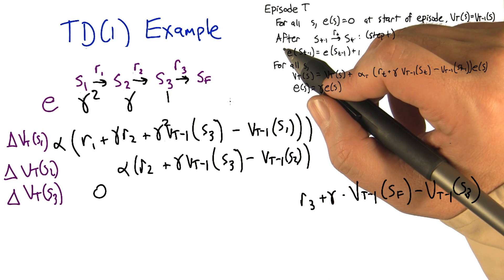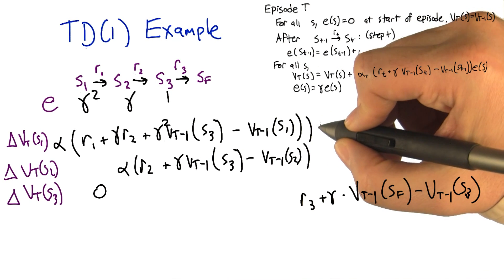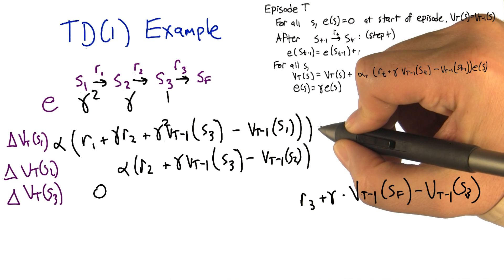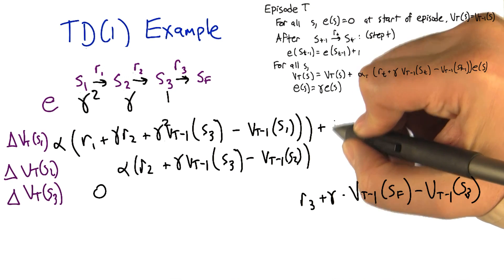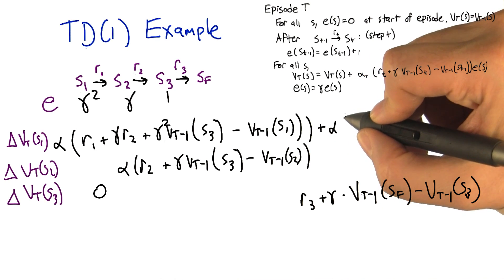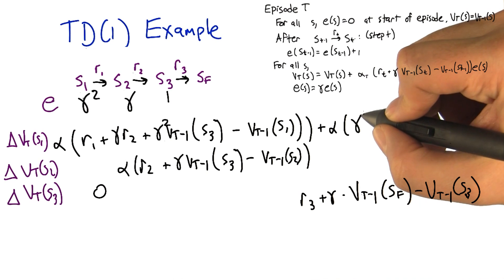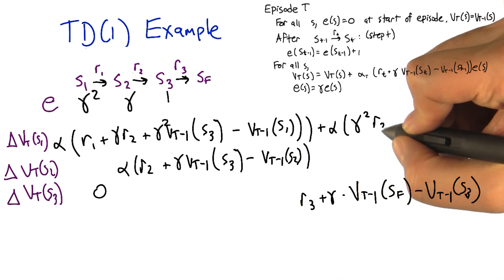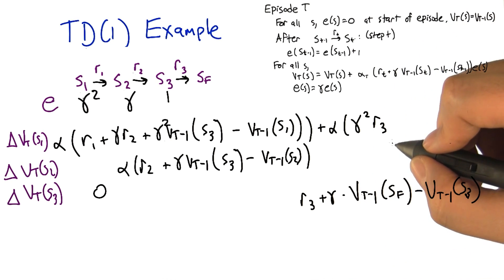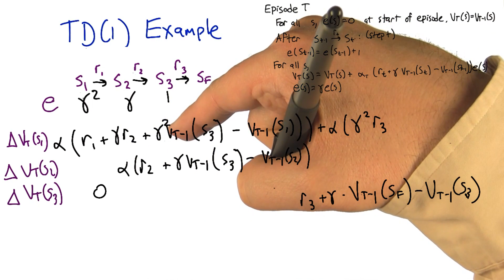Right, and so if there was another state after sf and we kept going, that would become gamma cubed, and s2 would become gamma squared, and s3 would become gamma, and so on and so forth. That's quite clever. Okay, so you would see r1 plus gamma r2 plus gamma squared r3.